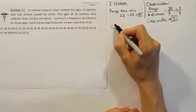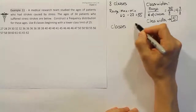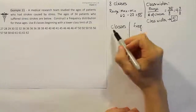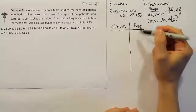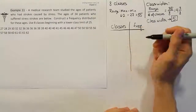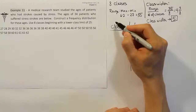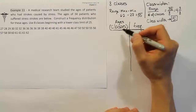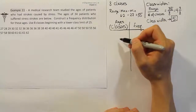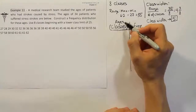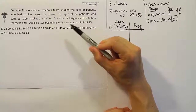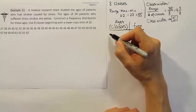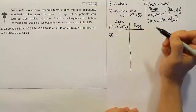We'll set up our table with classes and frequency columns. Frequencies are simply how many values fall into each category. The classes here represent ages, though generically they could represent miles or anything else. The problem tells us to begin with a lower class limit of 25 for the first class — because 27 is the smallest value in the data set, and 25 is a convenient nearby number.